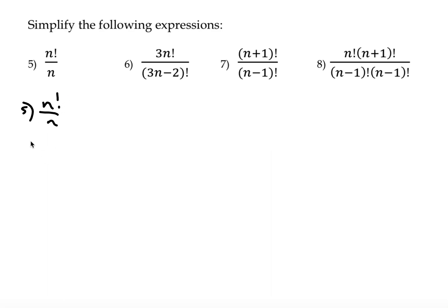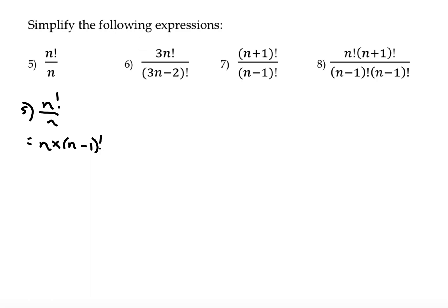Question 5: N factorial divided by N. This is interesting because we haven't got a factorial in the denominator. We can remember that N factorial equals N multiplied by (N minus 1) factorial — just as 8 factorial equals 8 times 7 factorial. So we split N factorial into N multiplied by (N minus 1) factorial. We have a common factor of N in numerator and denominator, which cancels, leaving us with just (N minus 1) factorial.